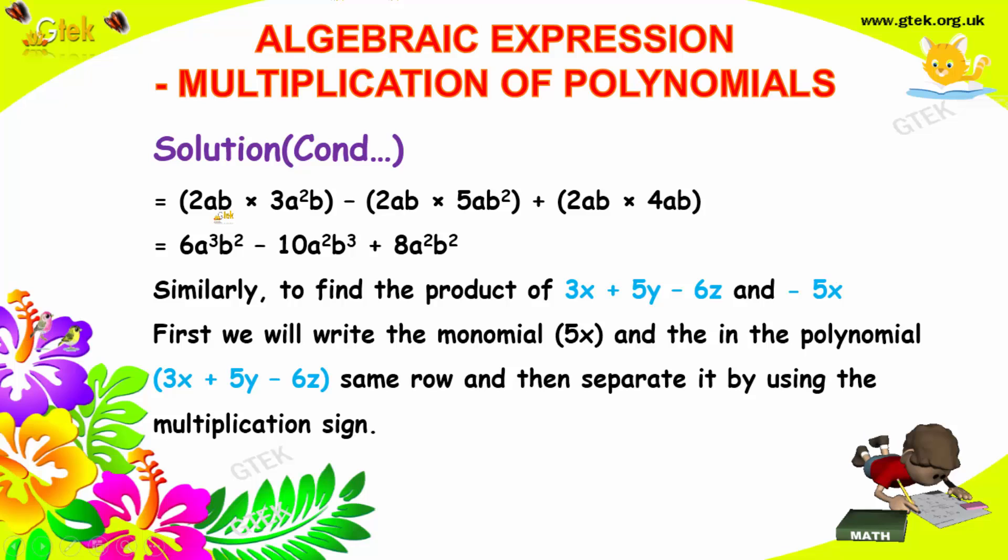You can see 2ab into 3a²b minus 2ab into 5ab², 2ab into 4ab. We got 2 into 3, it's 6. a into a², it's a³. So 1a and 2a, it will become 3a. b, another b, it's b².